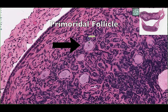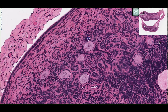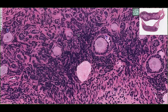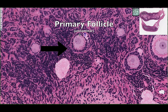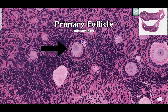The primordial follicle consists of a single layer of flattened cells, also known as follicular cells, and they surround the oocyte. Here we can see the cytoplasm, the nucleus, and the nucleolus of the oocyte. As the primordial follicle begins to develop, the layer of follicular cells surrounding it is going to increase in size. We can see this is a primary follicle, and the follicular cells surrounding it are now more cuboidal in shape, but we can still see the cytoplasm, the nucleus, and the nucleolus of the oocyte.